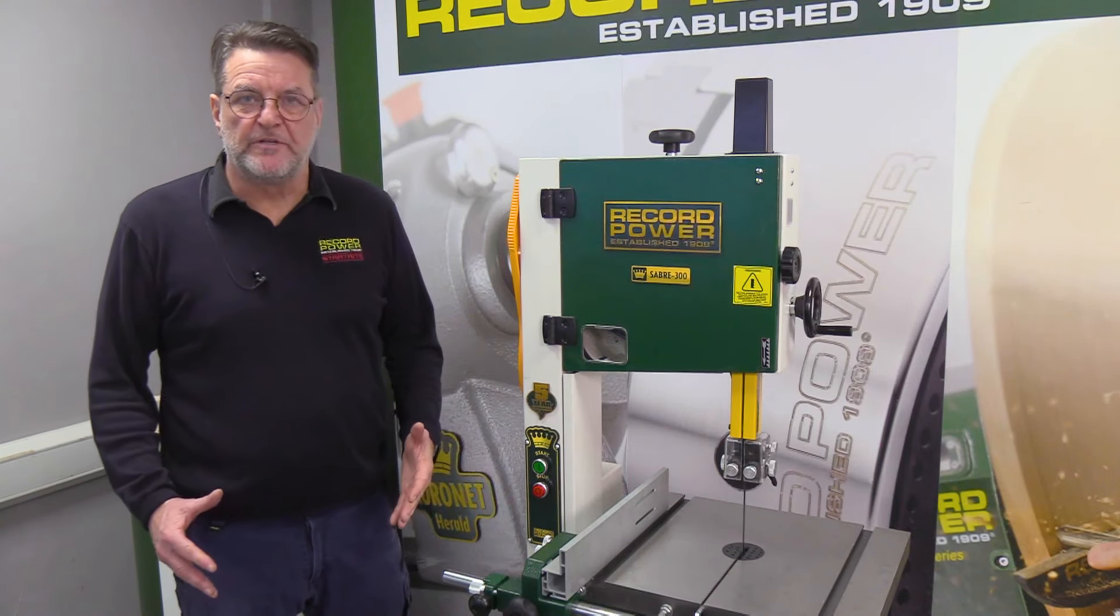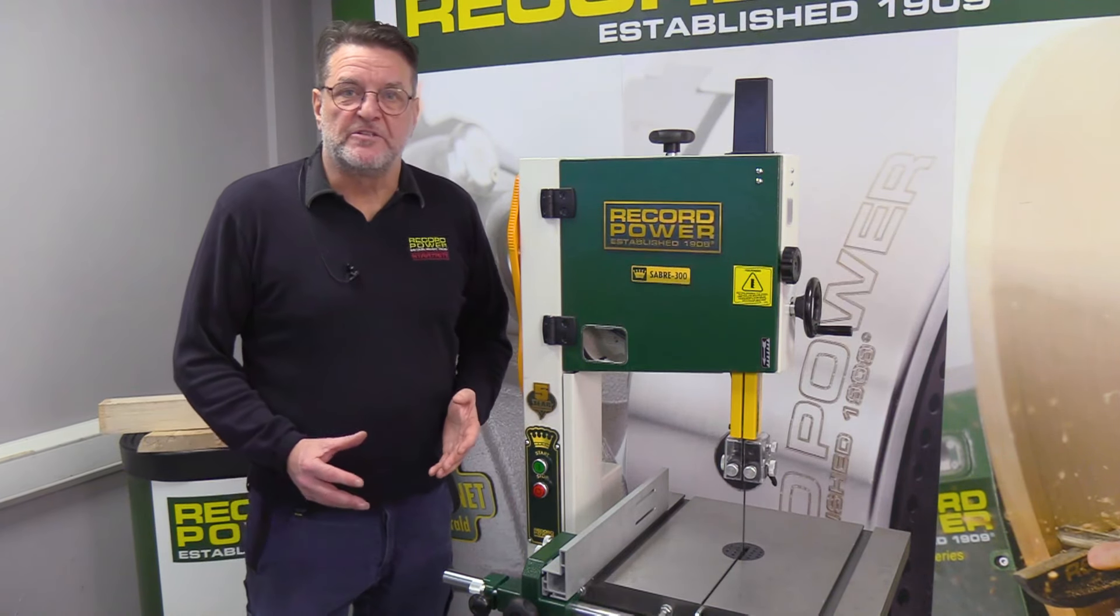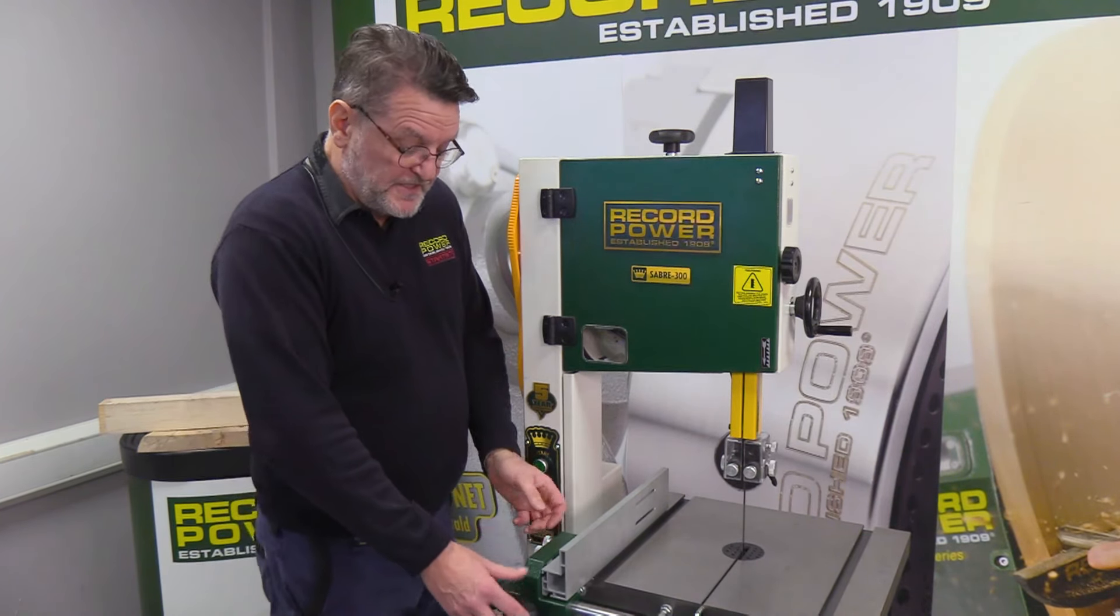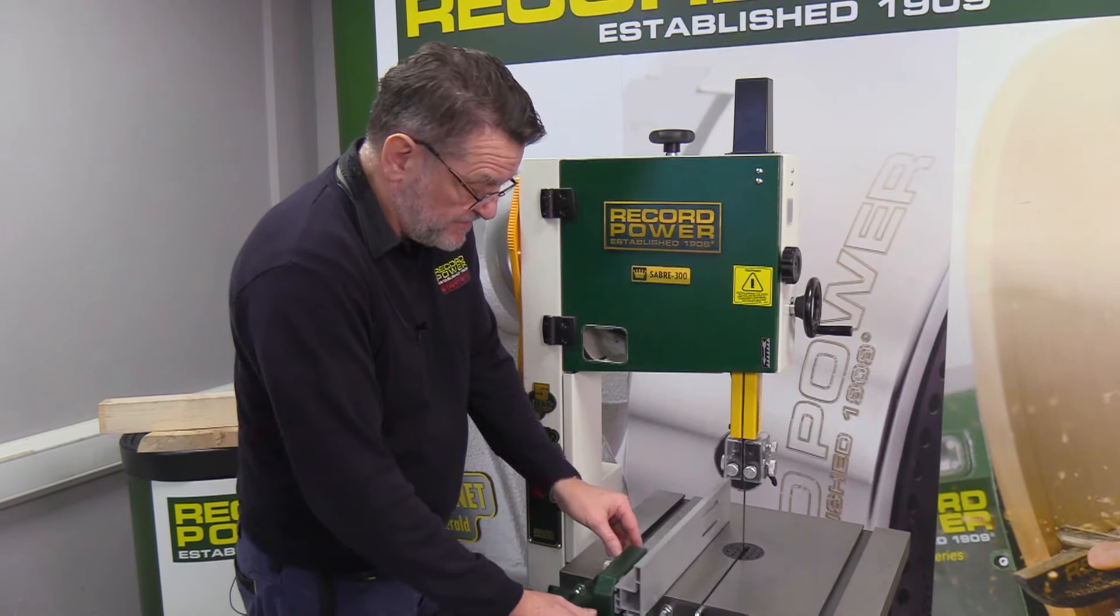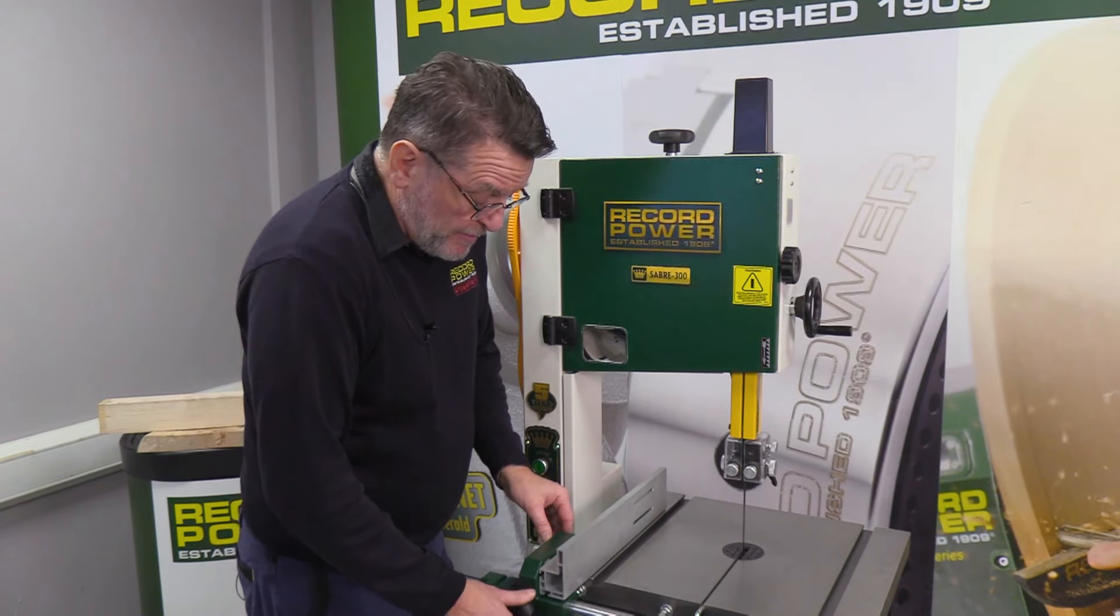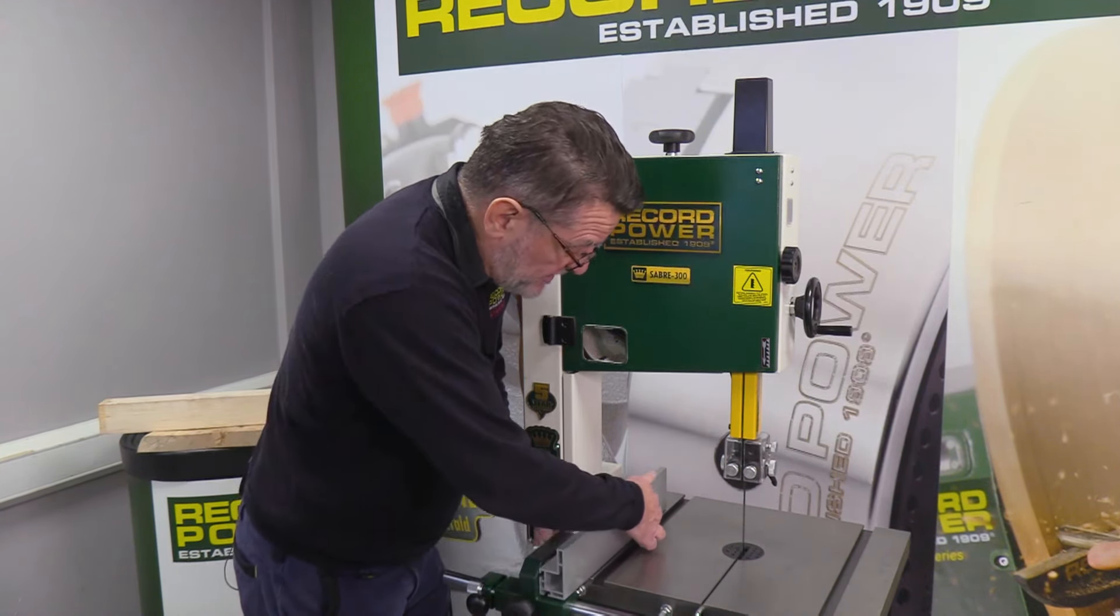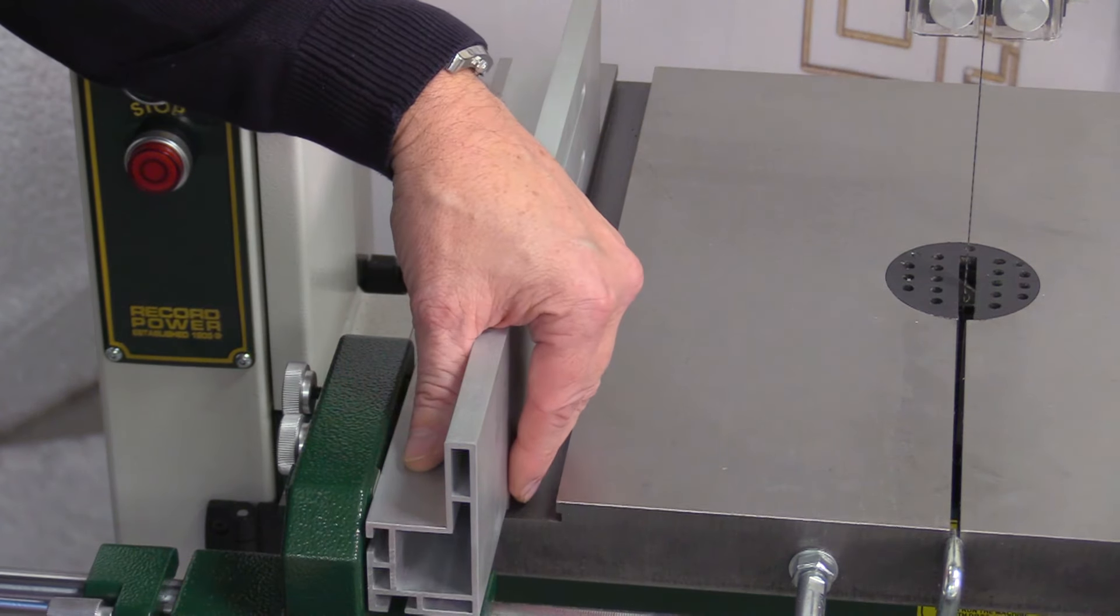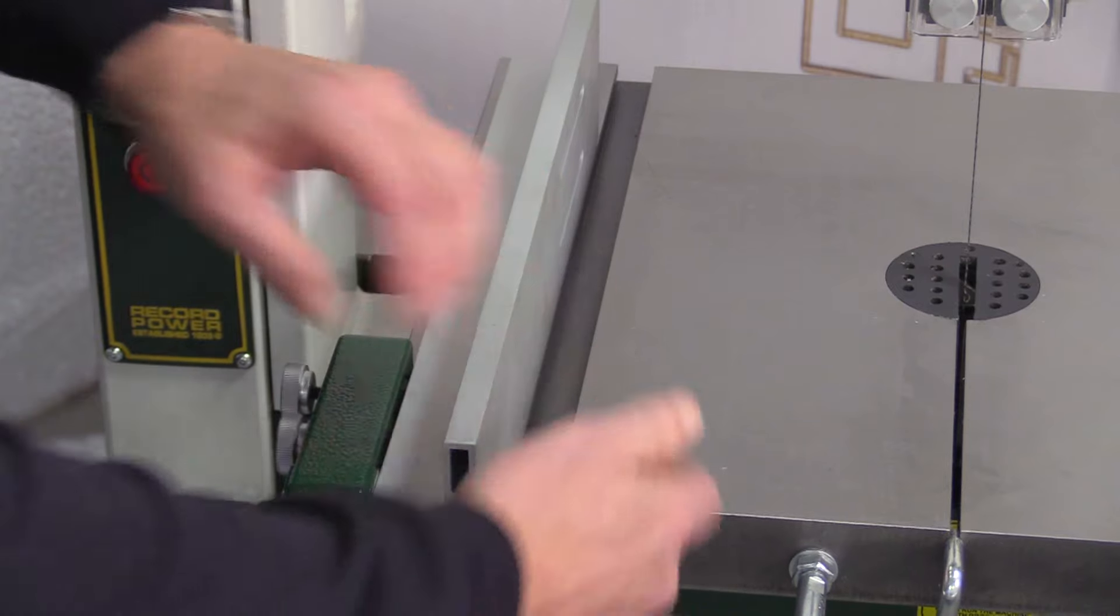On the Sabre 300, we have the advantage of the micro adjustment fence. The fence itself can be used as a standard fence, just taking it up and away from the blade. But for fine adjustment to make sure this is really nice and parallel, you can lock the fence off against the slot on the table.